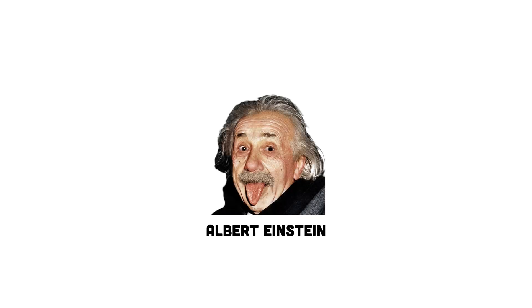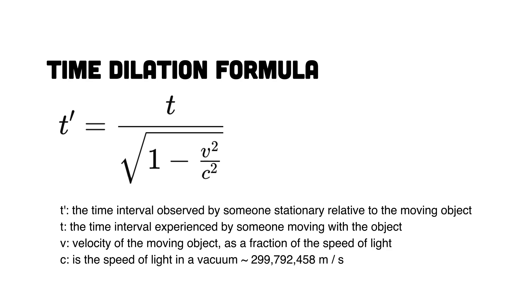According to Einstein's theory of special relativity, time actually slows down for objects that are moving super fast close to the speed of light. Imagine we have identical twins, let's call them Alice and Bob. Alice stays here on Earth while Bob hops into a spaceship and blasts off to a distant star at 99% the speed of light.